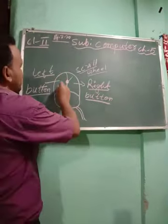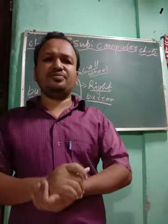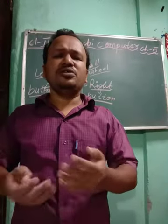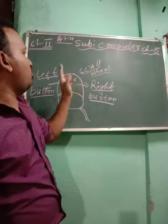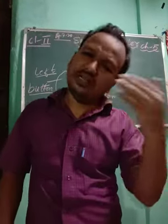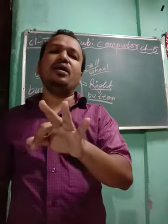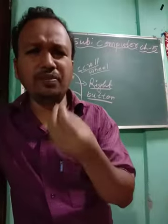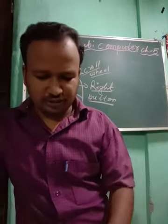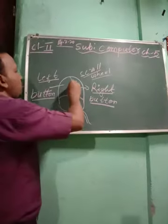Some mice have two buttons — left and right — and in some mice you will get three buttons. Nowadays most commonly we get a two-button mouse with a scroll wheel in the middle. But in some mice available in the market you will find three buttons as well.